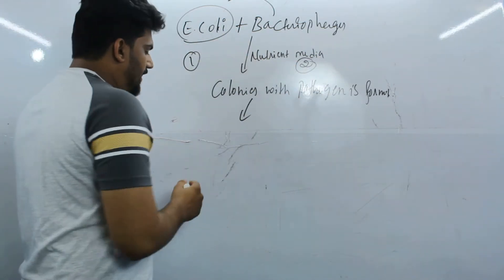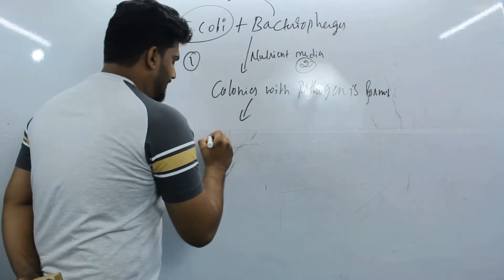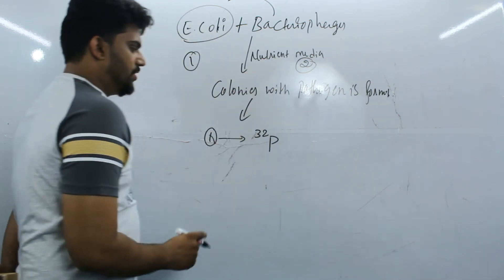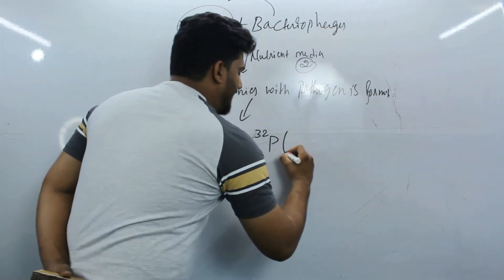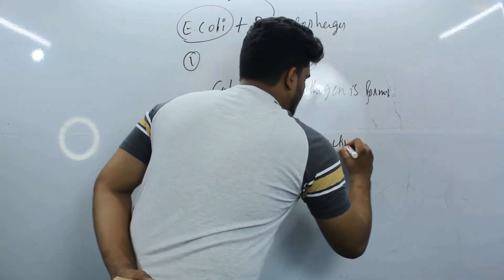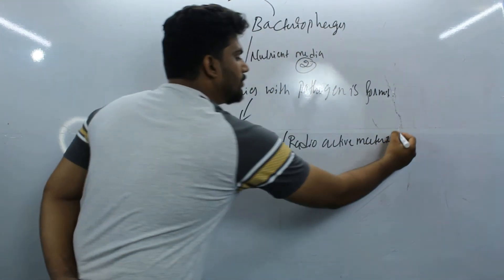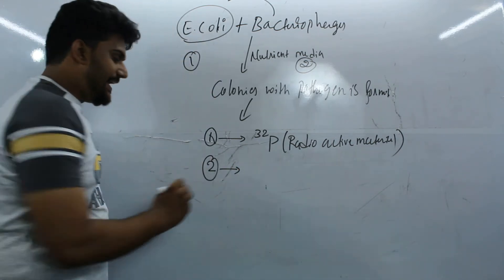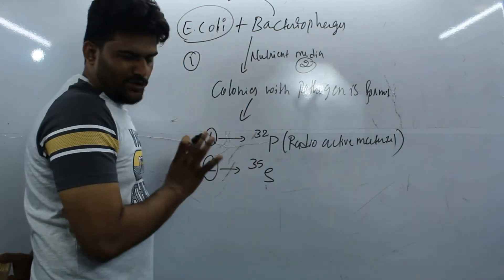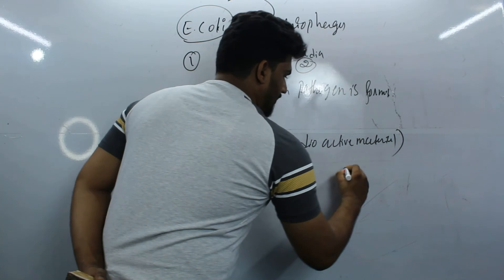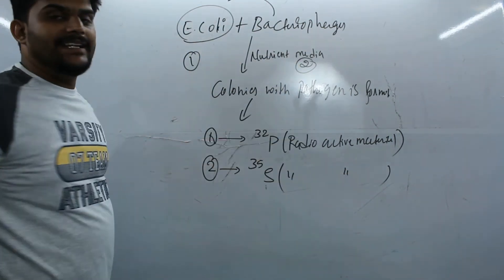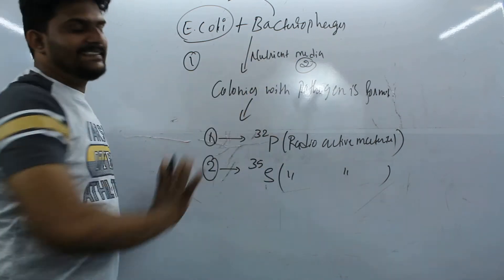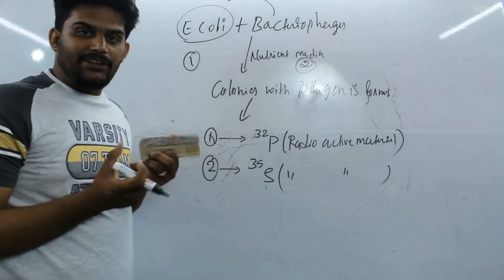In one culture media they added P-32, the phosphorus-32 radioactive material. In the second culture, they added sulfur-35 radioactive isotope. So now we have two culture medias with all things added into it. Then you might have a question: why were these two selected and added?